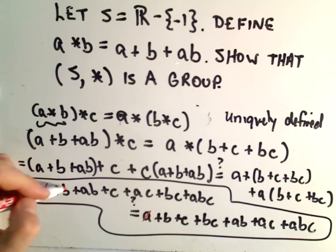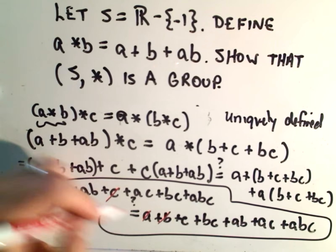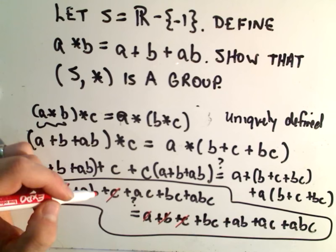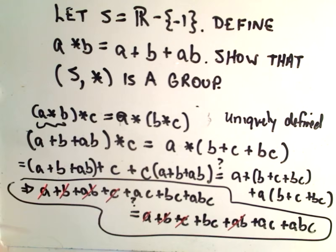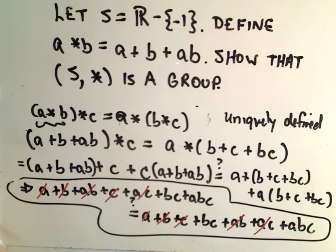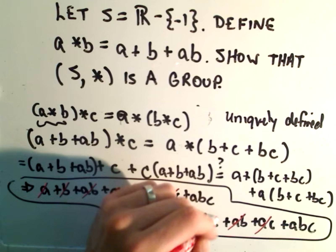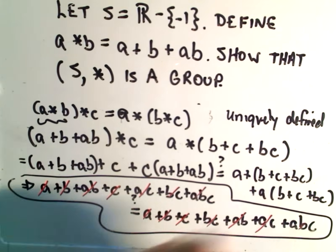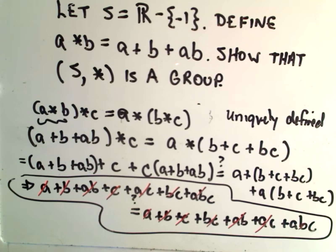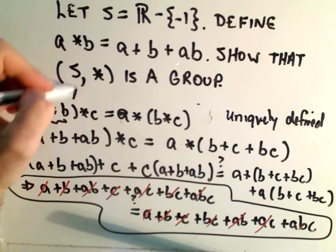Let's see what we can cancel. The A and the A cancels. The B and the B cancels. The C and the C cancels. There's an AB on both sides. There's an AC on both sides. There's a BC on both sides. And an ABC on both sides. So we've now shown that associativity holds.